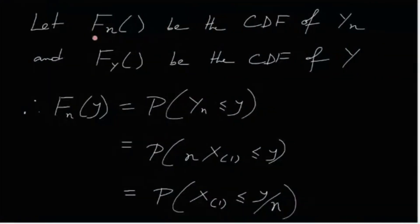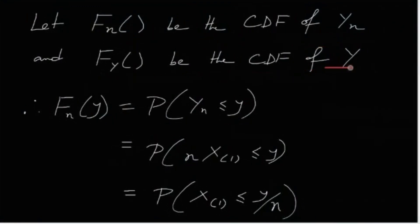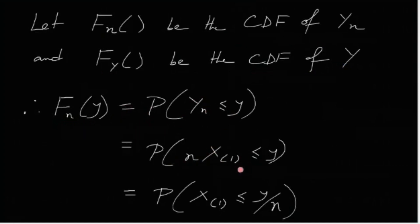Let Fn be the CDF of Yn and F_Y be the CDF of the random variable Y. So Fn(y) is the distribution function of Yn, which is P(Yn ≤ y) = P(n·X(1) ≤ y), where X(1) denotes the minimum of X1 through Xn. This equals P(X(1) ≤ y/n).